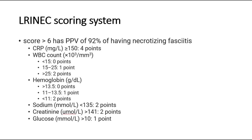There is a LRINEC score system, where a score of more than 6 indicates a 92% possible positive diagnosis of NF. We look at the lab results like CRP, white cell count, hemoglobin, sodium, creatinine, and glucose.